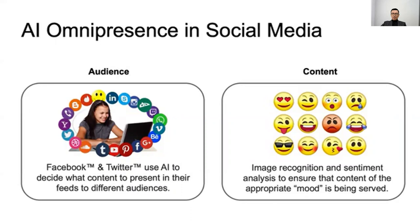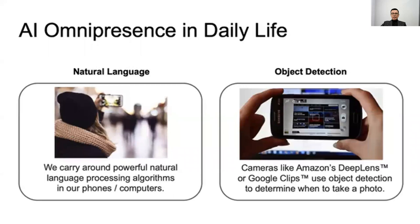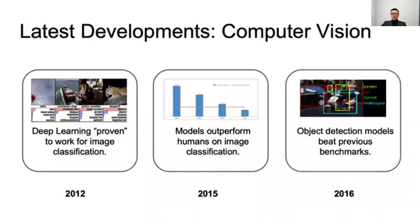For social media, platforms like Facebook and Twitter use Artificial Intelligence to decide what content to present in feeds to different audiences, using content image recognition and sentiment analysis to ensure appropriate content is served. In daily life, we carry around powerful natural language processing algorithms in our phones and computers. Devices like Amazon's Deep Lens or Google Clips use object detection to determine when to take a photo.